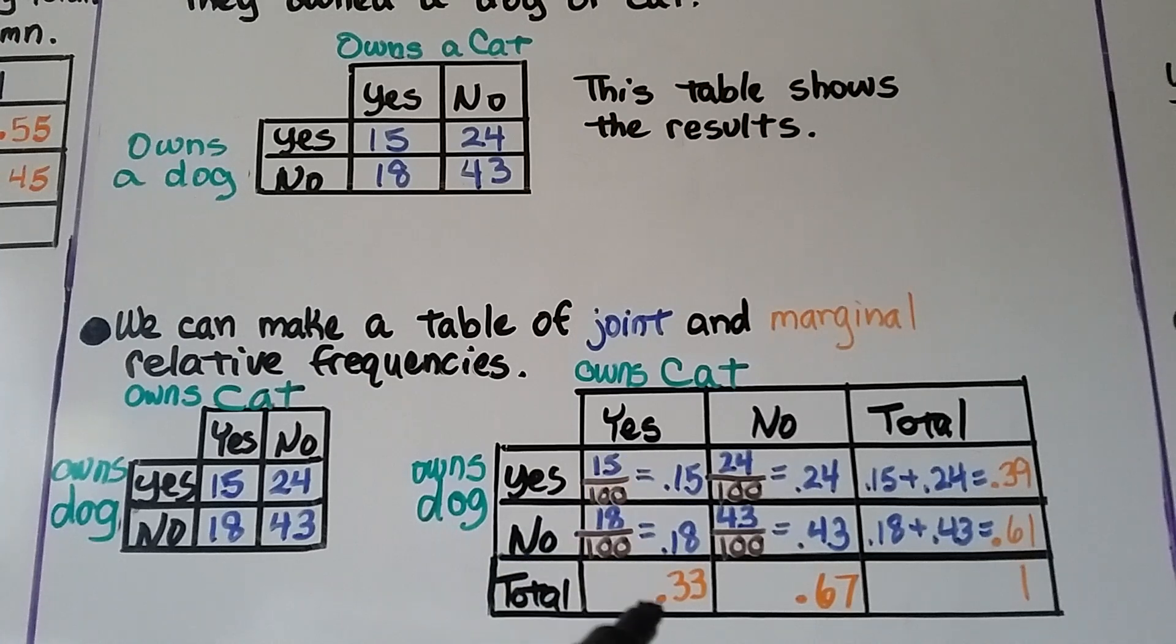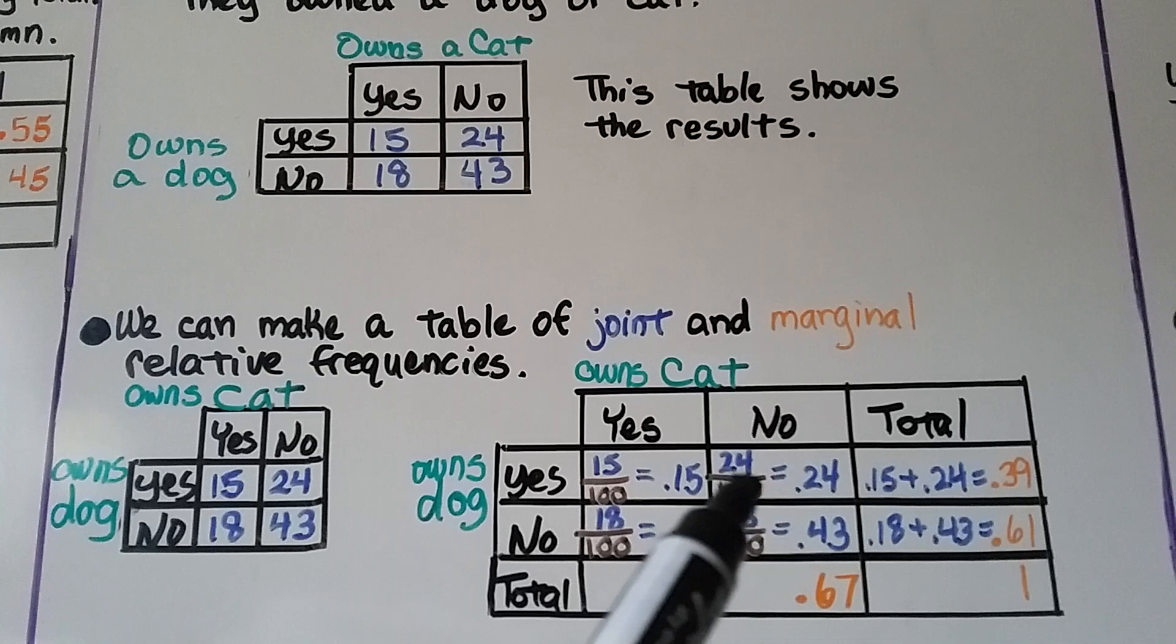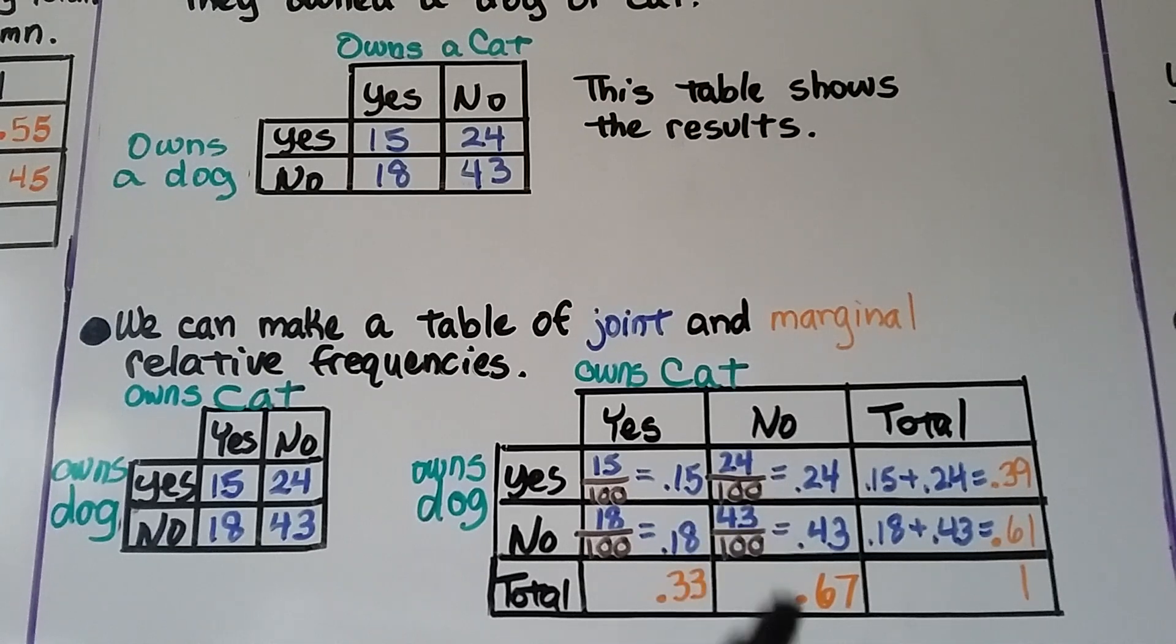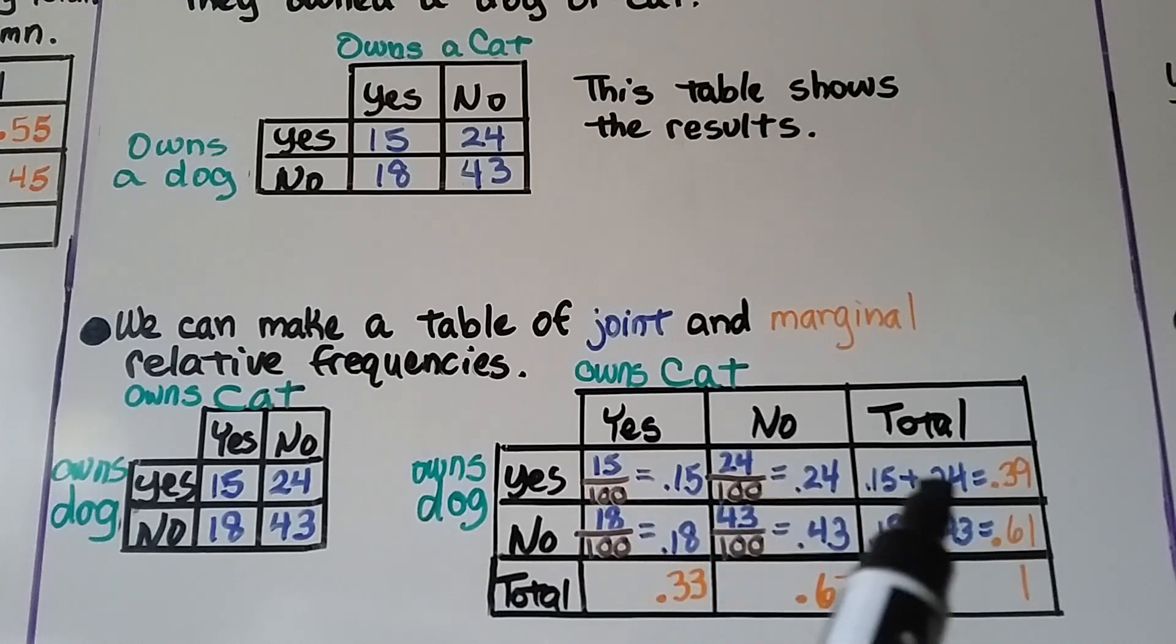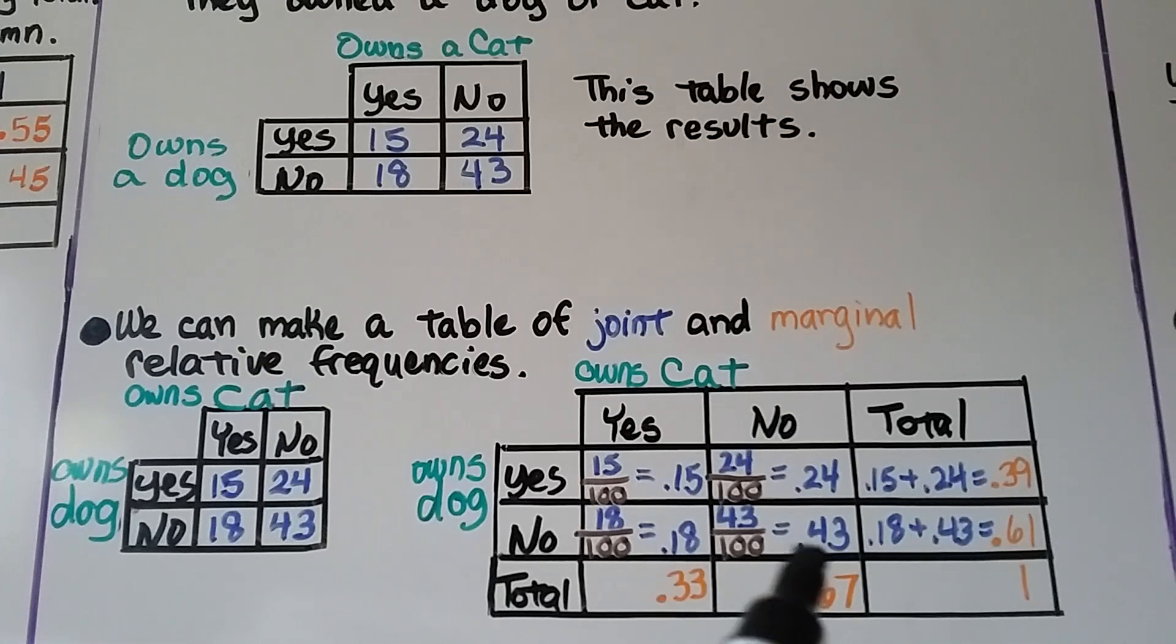We total the 0.15 and the 0.18 and get 0.33. We total the nos here, 0.24 and 0.43 gives us 0.67. If we total these two numbers, we're going to get a 1. When we total the 0.15 and the 0.24, we get 0.39. 0.18 plus 0.43 gives us 0.61. When we total these, we get a 1.